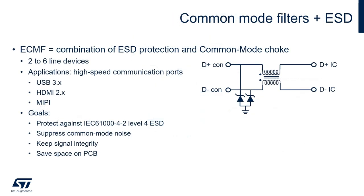The first typical type of ASIP ST offers are integrated common mode filters with ESD protections. They come in two to six-line devices and are typically needed for high-speed transmission lines such as USB or HDMI. The goal is to suppress the common mode noise while being transparent to the differential signals, and to provide full IEC 61000-4-2 system-level ESD protection at the same time. A whole family of ECMF devices with different mechanical or electrical characteristics were developed to address all potential applications needing such a function. The example given here is that of a Mi-P type of connection.